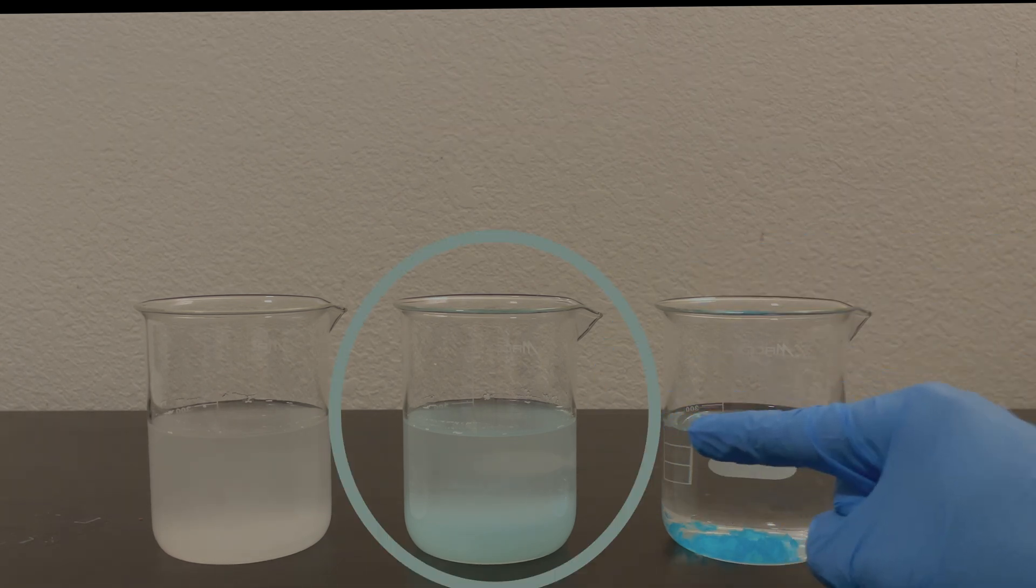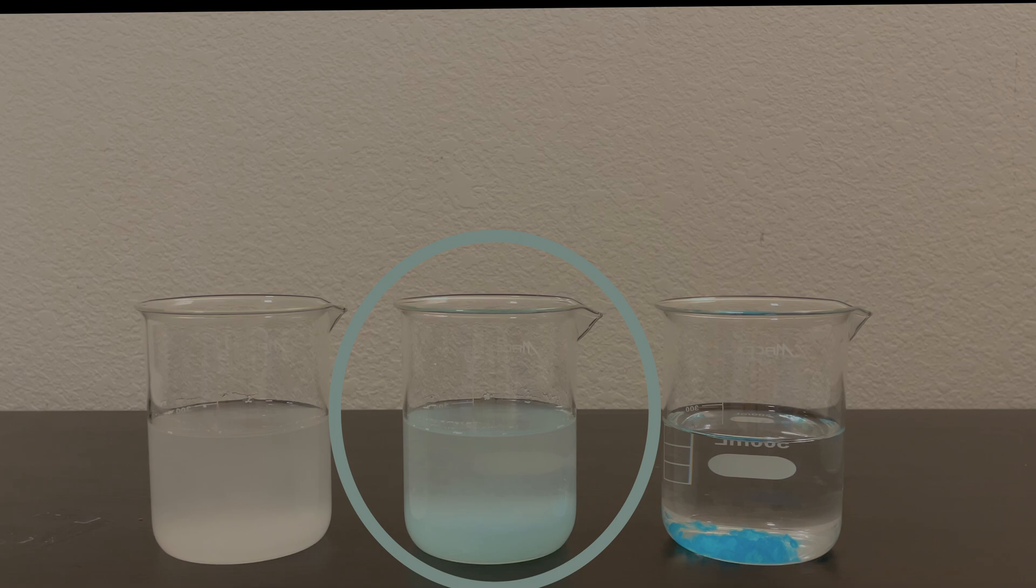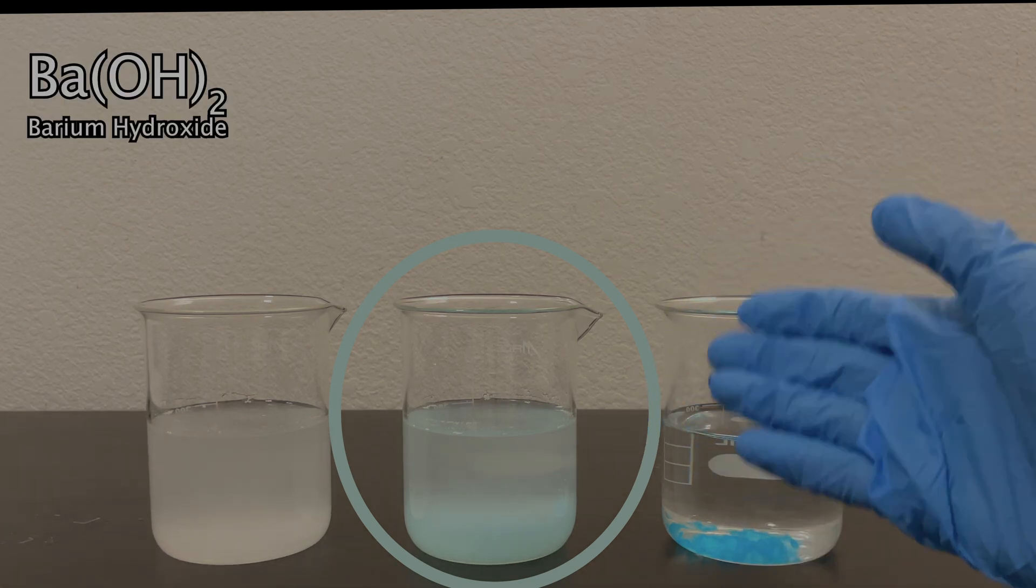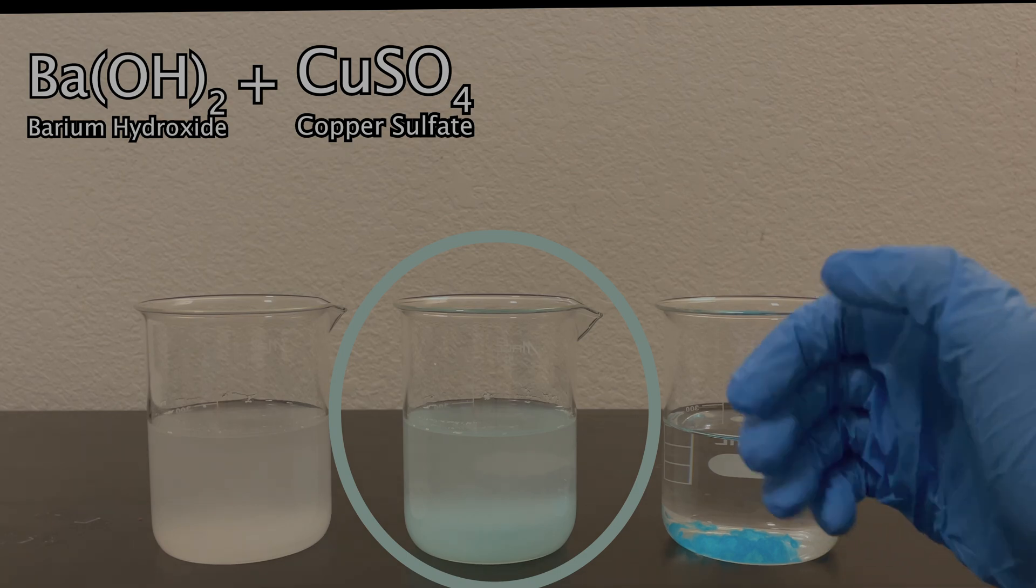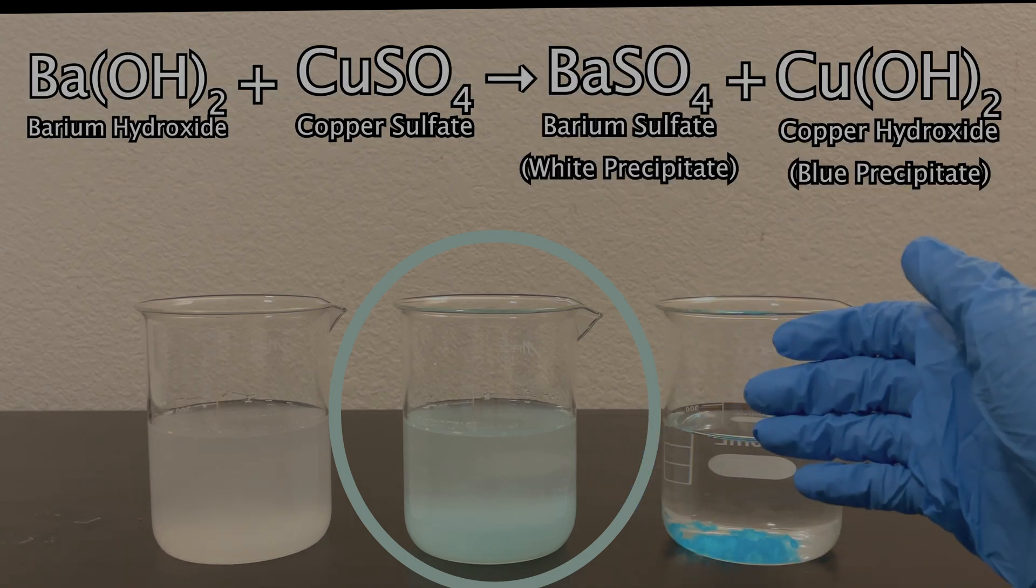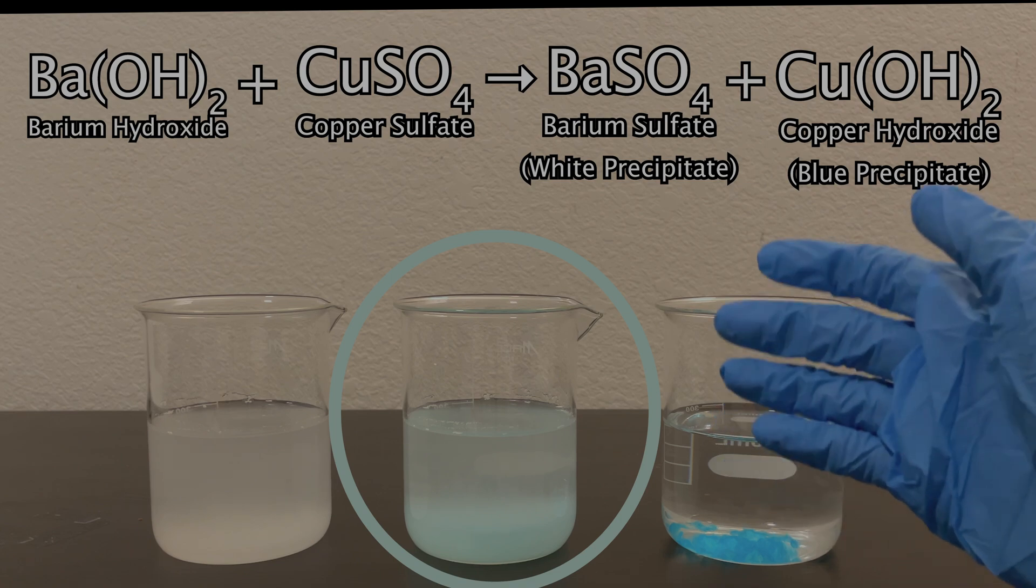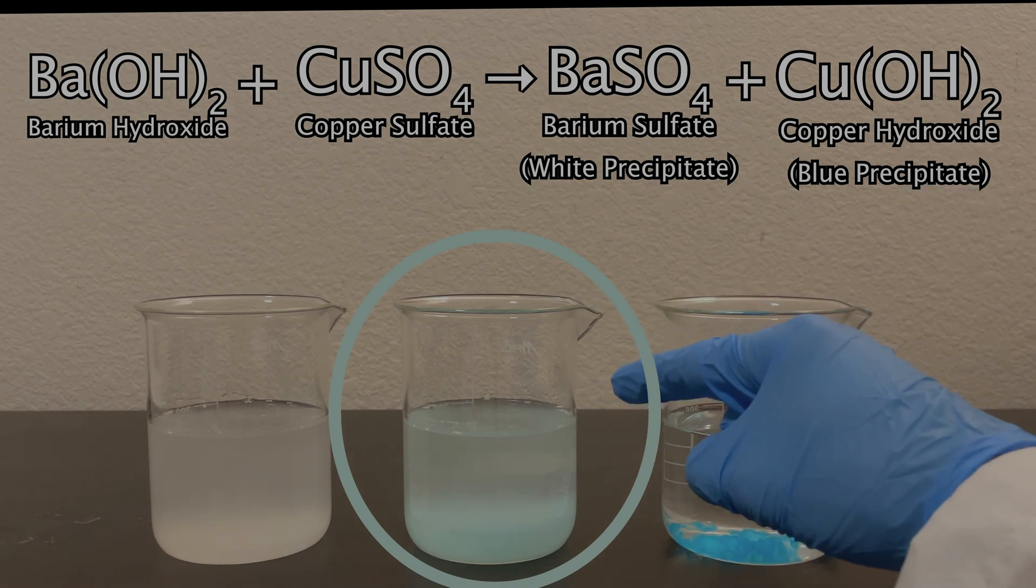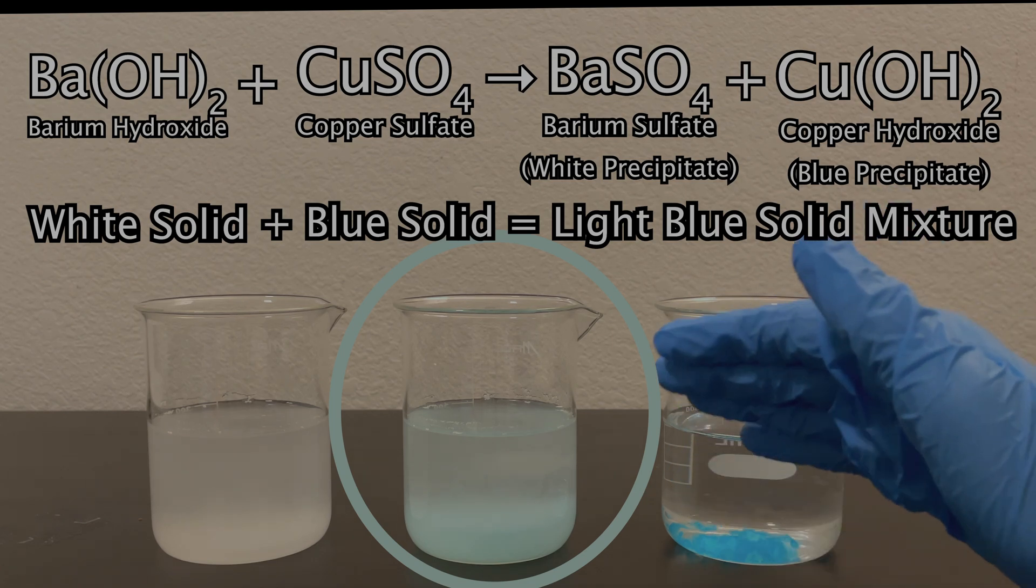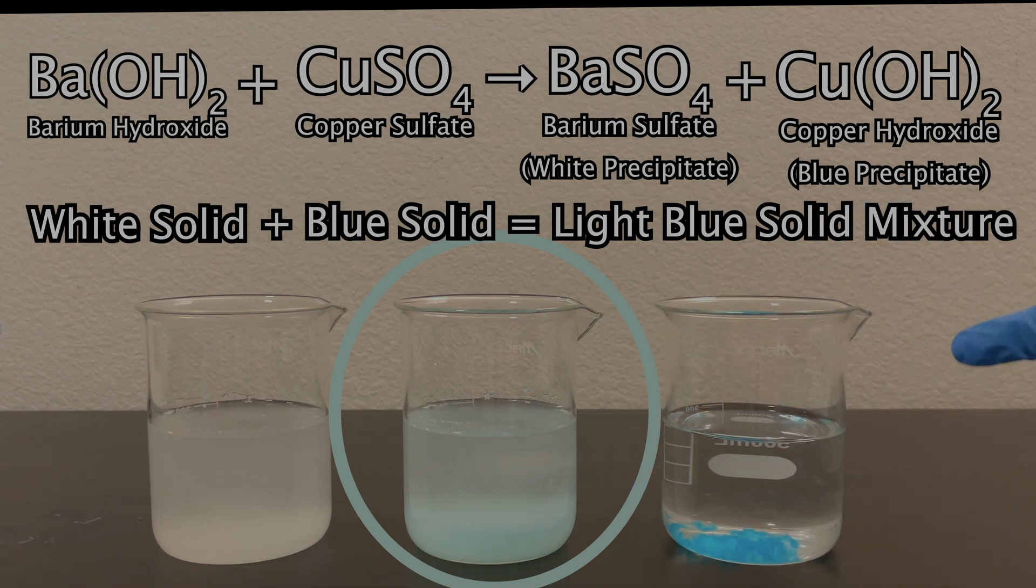In the middle, I did kind of a mixture of the two. I started with barium hydroxide and then added copper sulfate, so I created both barium sulfate and copper hydroxide. Therefore, the color of the resulting solid mixture in this middle beaker is an intermediate of the colors of the individual precipitates from these other two beakers.